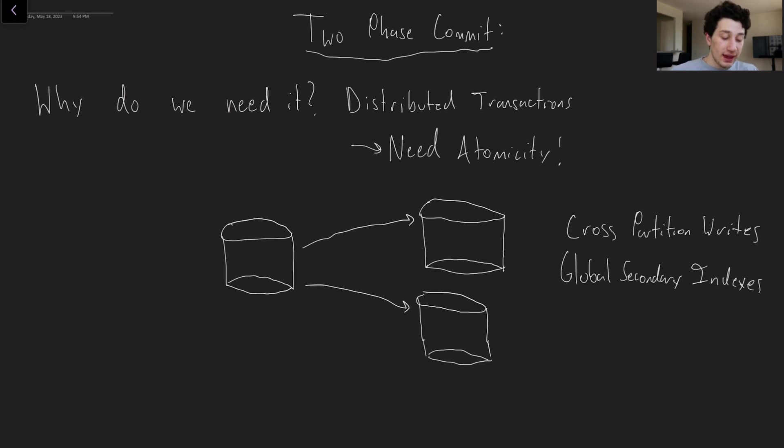And so what that means is that basically now we often find ourselves having to write to multiple physical computers at one time for a variety of reasons. The first just being cross-partition writes, right? Sometimes you make a write and it needs to go to multiple different places. And the second is global secondary indexes, where instead of just having a local secondary index where we basically index all of our data per node, we actually take all of the aggregate data across partitions and we split up that global index such that a piece of the index is on every single node.